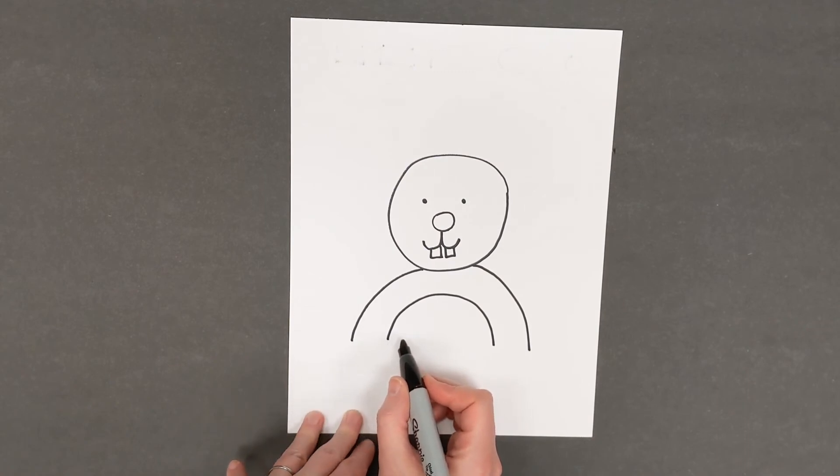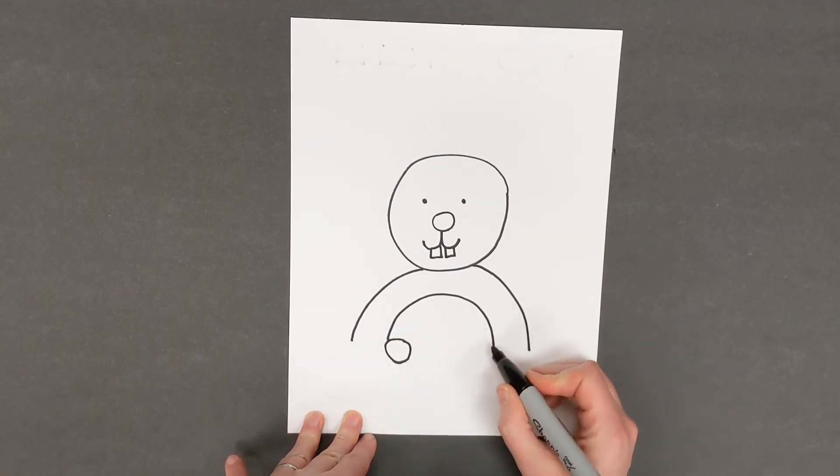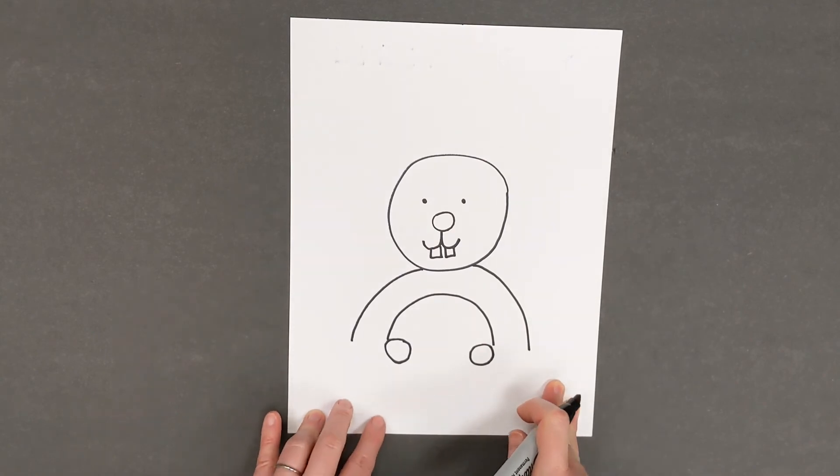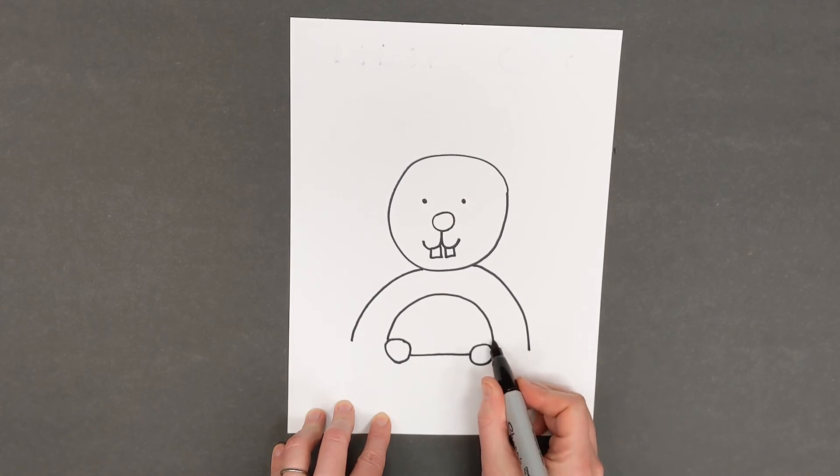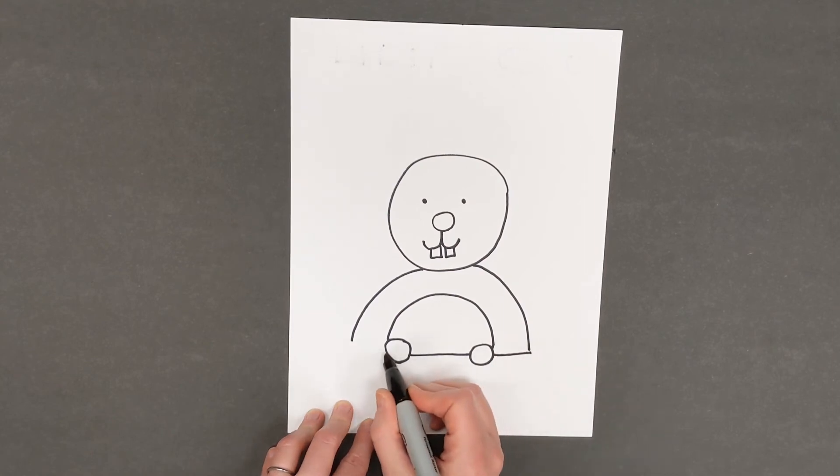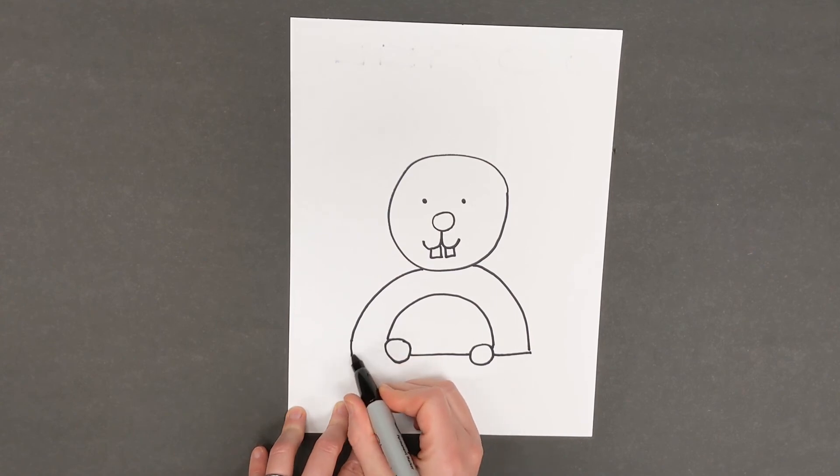Right underneath your smaller half oval or arch I want you to draw two small circles, one on the left and one on the right. Between the two small circles I'd like you to draw a line. And then from the bottom of your half oval or arch to the other half oval or arch I'd like you to draw another line going horizontally. And then on the left side I'd like you to draw another line.